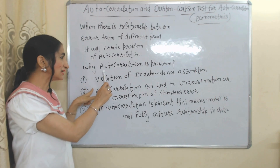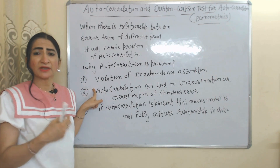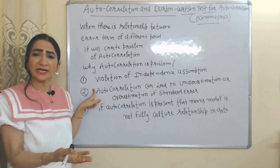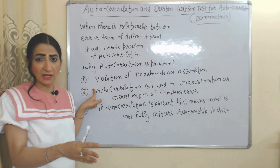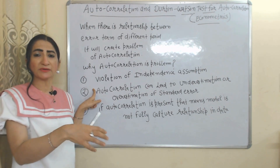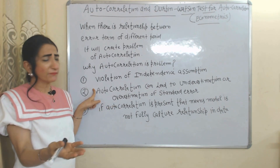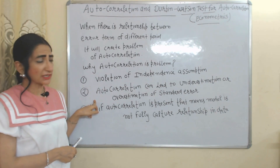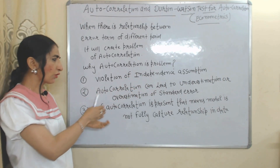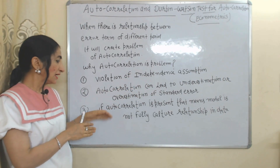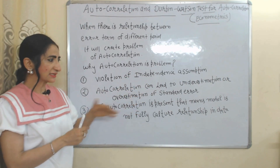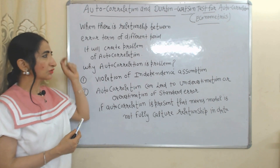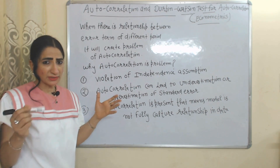But why is autocorrelation a problem? It is a violation of the independence assumption. We do many tests by assuming error terms of different periods are independent from each other. But if there is some relationship between error terms of different periods, there is a violation of that assumption. Also, autocorrelation can lead to underestimation or overestimation of standard errors, meaning the model is not able to fully capture the relationship in the data.